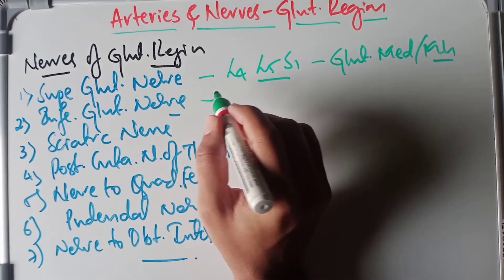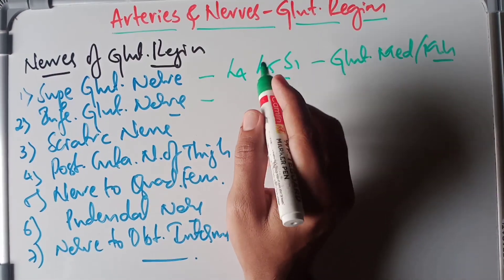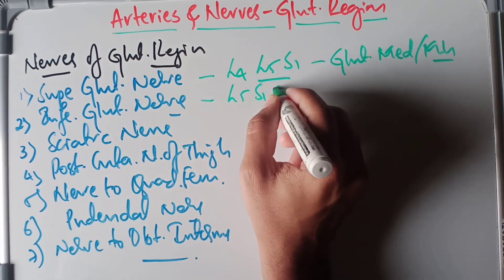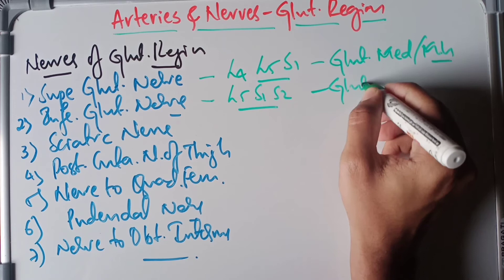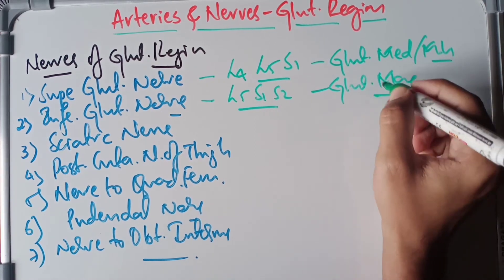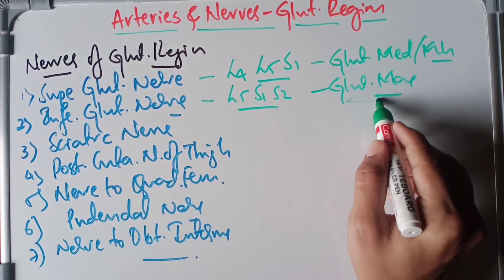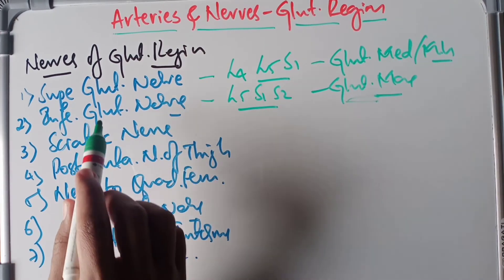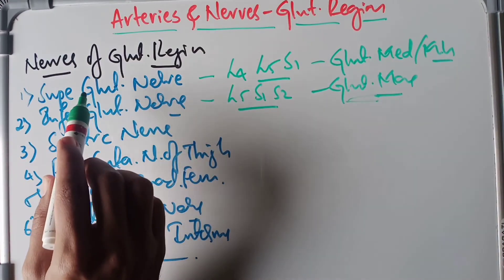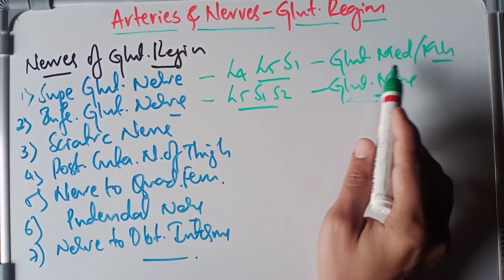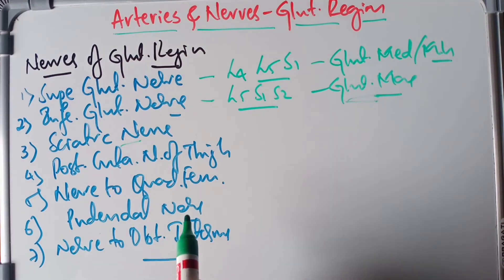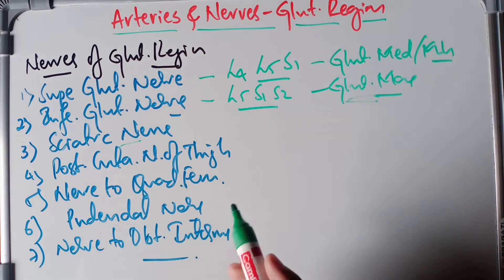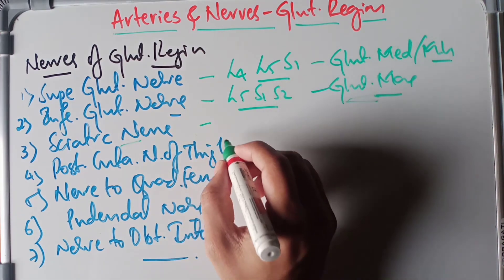The inferior gluteal nerve arises from the ventral rami of L5, S1, and S2, and it supplies the gluteus maximus. Remember: gluteus maximus is supplied by the inferior gluteal nerve, while gluteus medius and minimus are supplied by the superior gluteal nerve. The sciatic nerve is also part of the sacral plexus. The posterior cutaneous nerve of the thigh arises from S1, S2, and S3 of the sacral plexus.